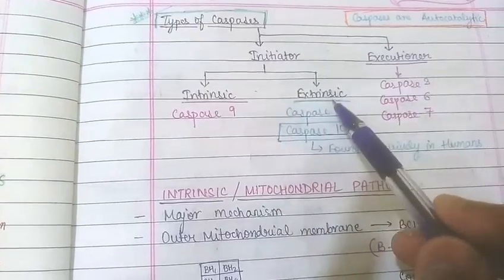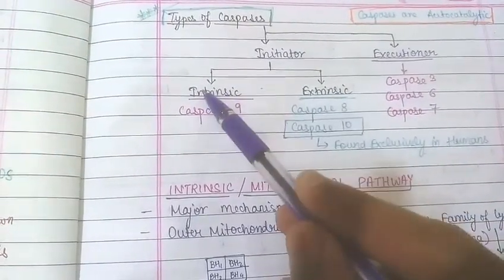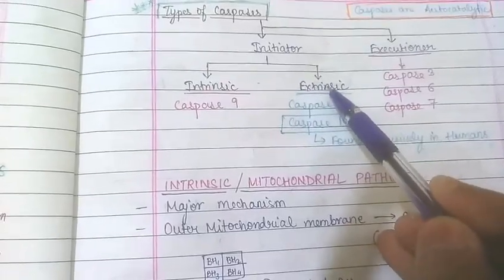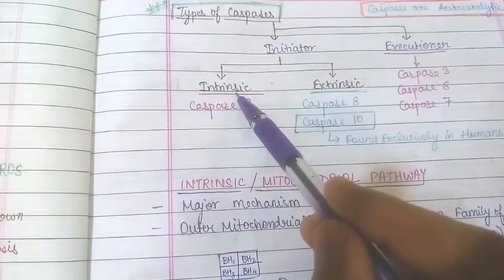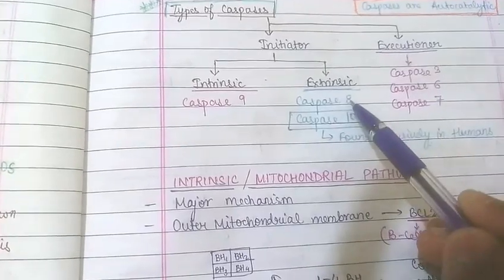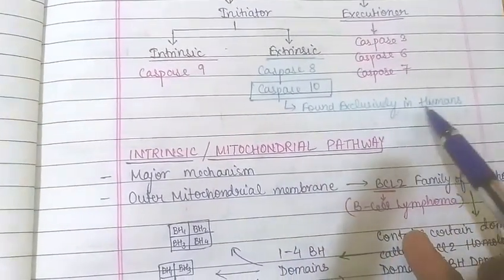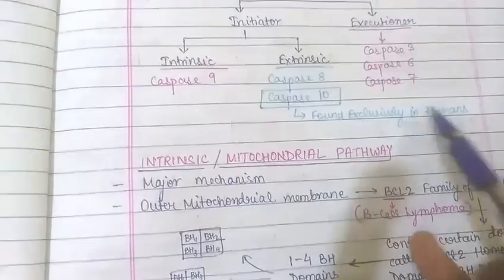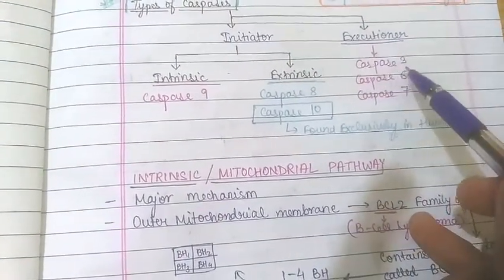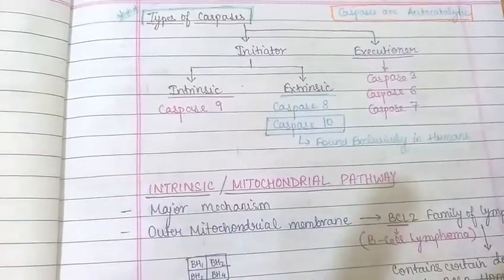Initiator caspases are of two types: intrinsic and extrinsic. In the intrinsic pathway, caspase 9 is activated; in the extrinsic pathway, caspases 8 and 10 are activated. Caspase 10 is found exclusively in humans. The executioner caspases, which execute the apoptotic process, are caspases 3, 6, and 7. Caspases are autocatalytic.